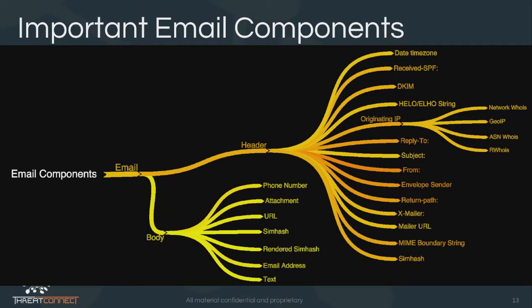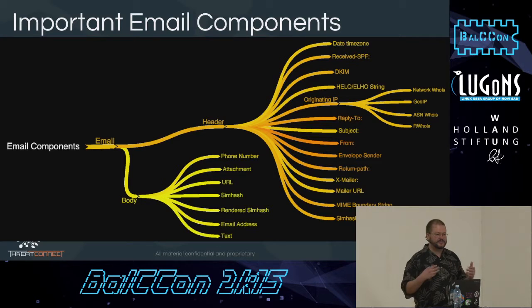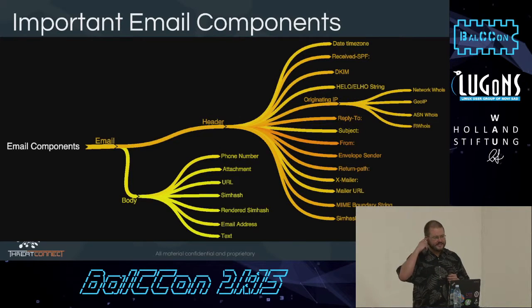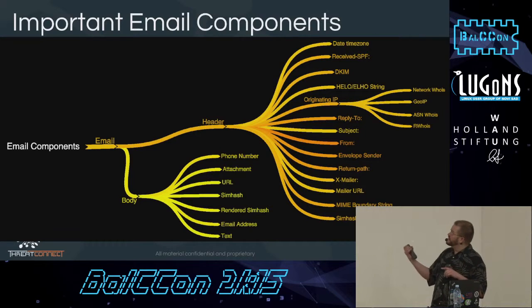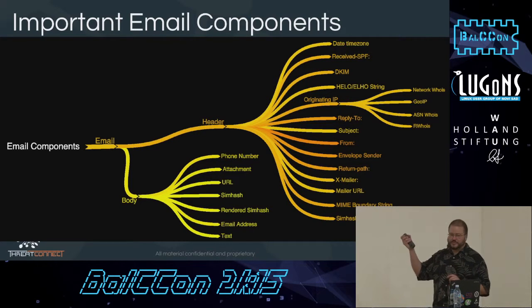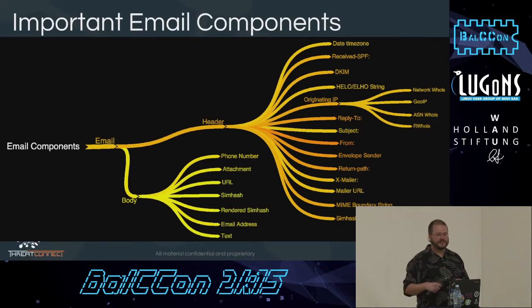SPF and DKIM are both important. DKIM is Domain Keys, and both SPF and DKIM are methods of verifying whether the sender of an email is who they claim to be and is coming from the domain they claim. You can find forged DKIM keys. Also, if you see SPF fail, pay more attention to that particular piece of spam.